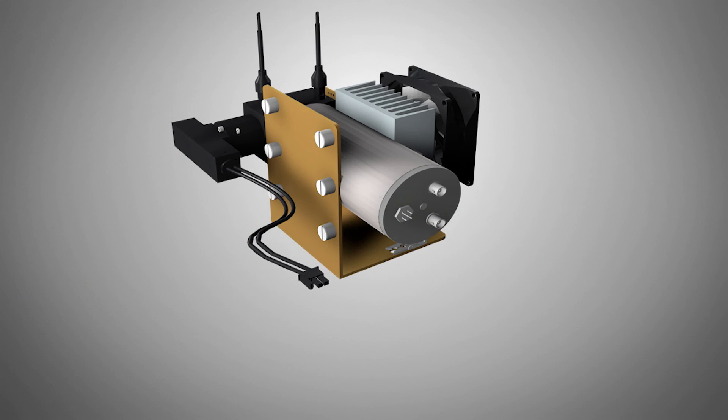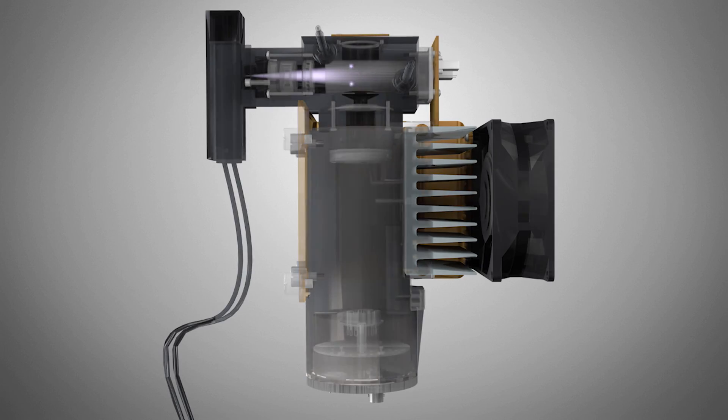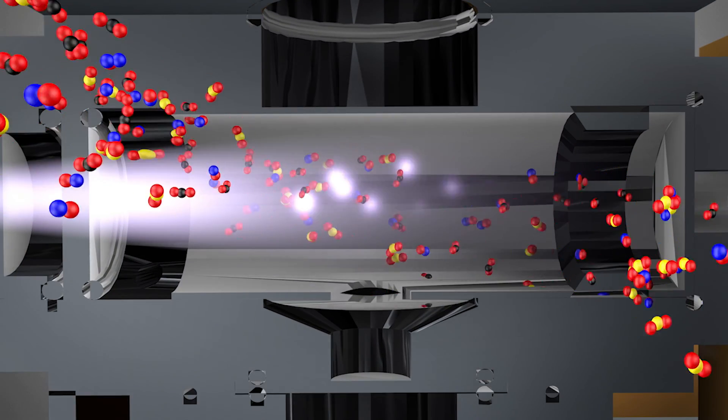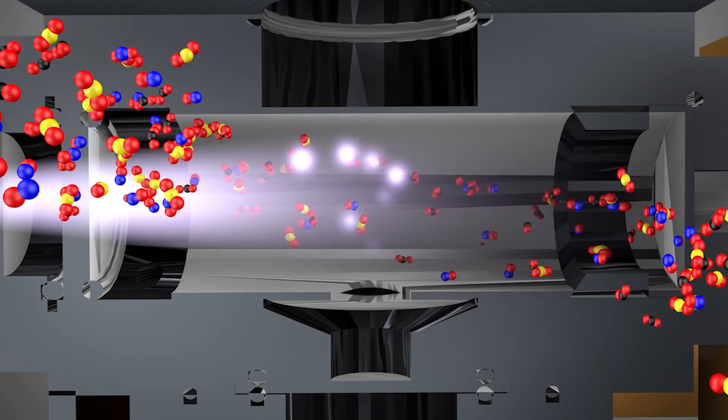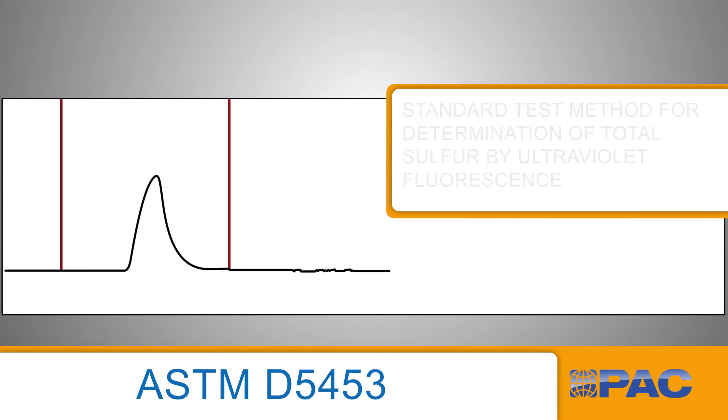The sample is exposed to ultraviolet light, which excites any sulfur dioxide present. Upon returning to a stable state, energy is emitted as a flash of light, which is measured by a photomultiplier tube. The amount of light emitted is proportional to the amount of sulfur in the sample. The detection method is based on primary test method ASTM D5453 for high correlation to laboratory results.